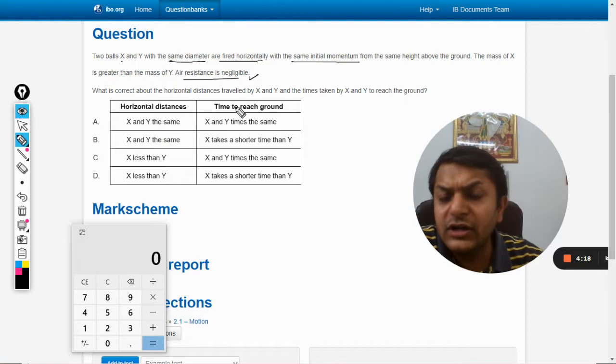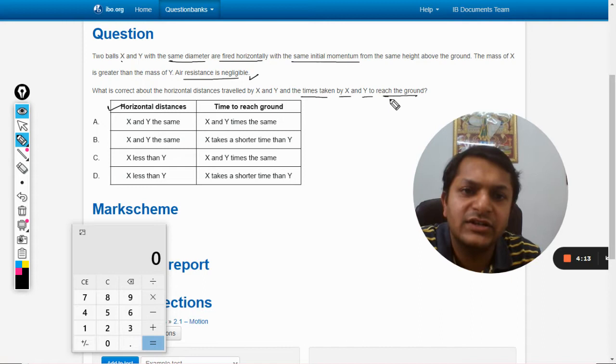What is correct about the horizontal distances traveled by X and Y and the time taken by X and Y to reach the ground?